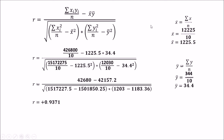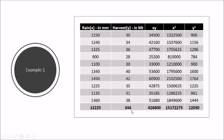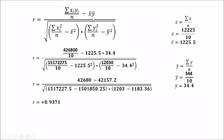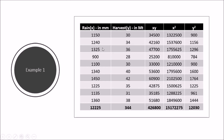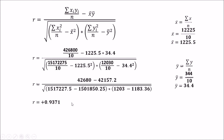First we calculate x-bar as sigma x over n, which gives 1225.5, and y-bar as the mean of y, which is 34.4. Substituting into the equation: sigma xy equals 426,800, x-bar is 1225.5, y-bar is 34.4, and n is 10. We also substitute the x-squared and y-squared values. After simplifying, we get an r value of plus 0.9371, indicating that rain and harvest are strongly positively correlated.